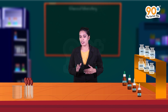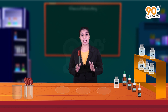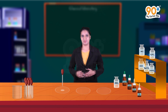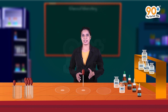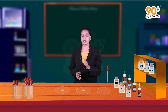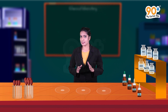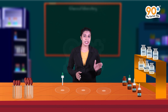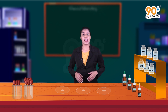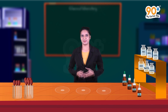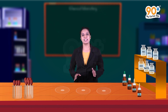Here I have three watch glasses. I am going to add one drop of nitric acid to the first watch glass, one drop of hydrochloric acid to the second watch glass, and one drop of sulfuric acid to the third watch glass. Now let's add one drop of red litmus solution to all of these watch glasses. Can you see any color change? No, we can't see any color change. It indicates that these solutions are not basic in nature.